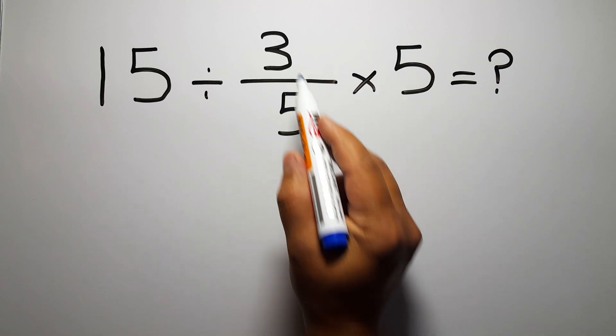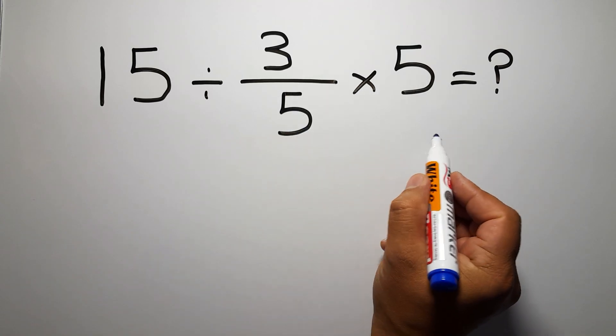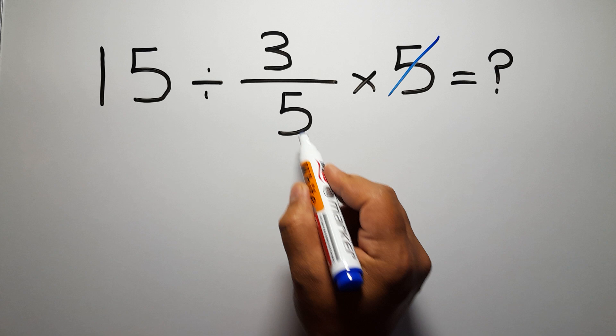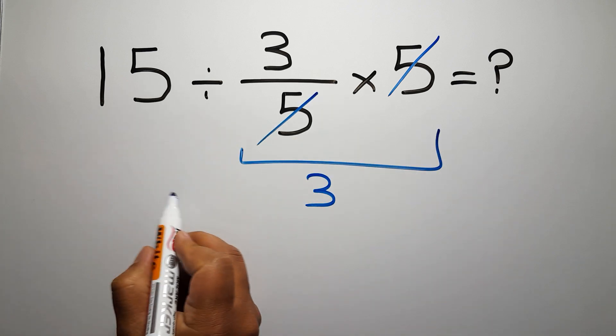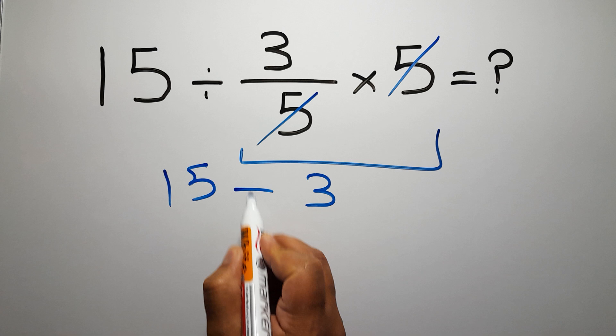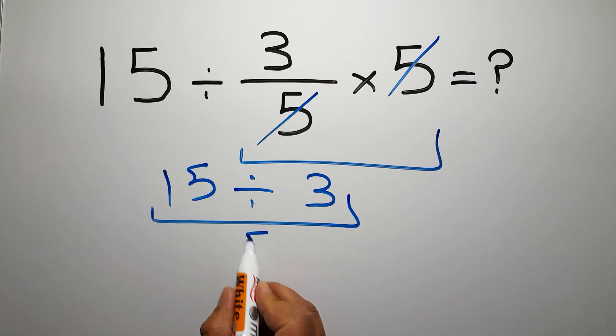First, we do this multiplication. 3 over 5 times 5. We can easily cancel this 5 and this 5. So we have just 3, and 15 divided by 3 is just 5.